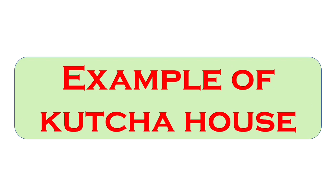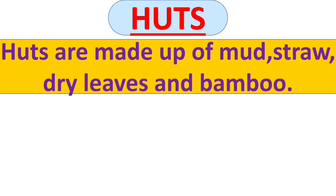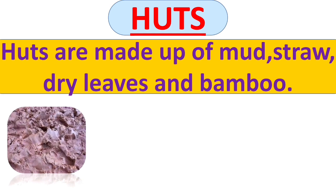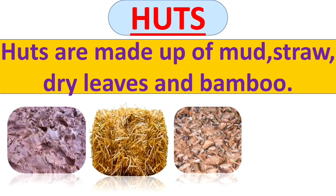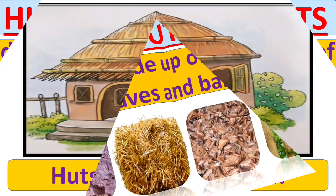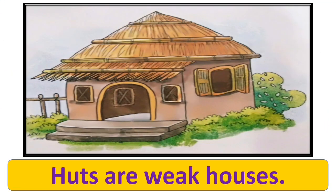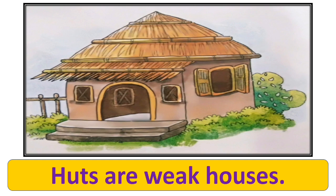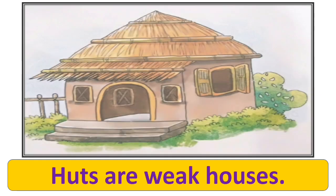Let's see some examples of Kaccha house. The first example is huts. Huts are made up of mud, straw, dry leaves and bamboo. As you can see in the picture, this is a hut. Huts are weak houses.